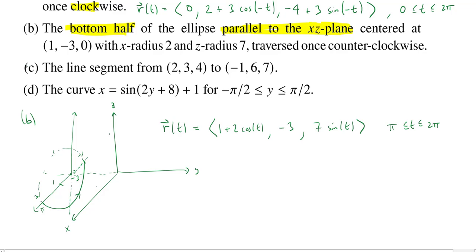How about part C? So this is just a line segment. These are really fast and snappy to do. So we start with (2, 3, 4) and we're going to go to (-1, 6, 7). So we'll have a 2. And we ask, how far do you move in the X direction? Well, you go from 2 down to -1. So you go down by 3. So we'll do minus 3t.